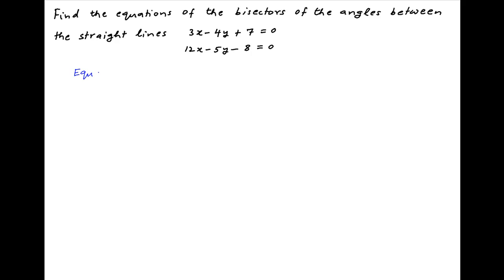The equations of the bisectors of the angles between the given straight lines are 3x minus 4y plus 7 divided by the square root of the sum of the squares of the coefficients of x and y in the first equation.